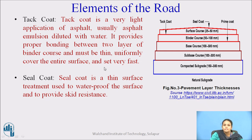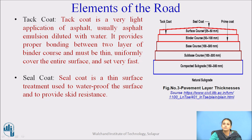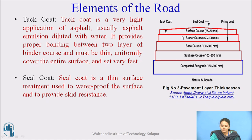Seal coat is a thin surface treatment used for waterproofing the surface and providing skid resistance. It is provided over the top part of the road surface to prevent rainwater from damaging the surface. These are the common elements of the road structure below the road level — normally we see only the topmost surface, but beneath it these are the common elements of the road.